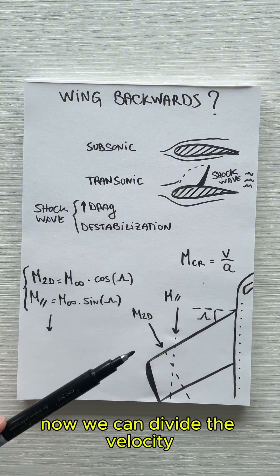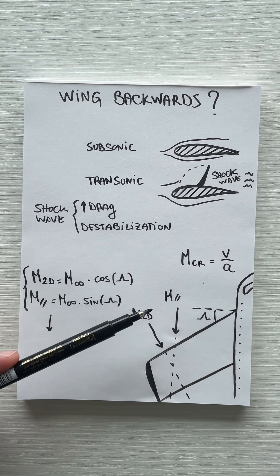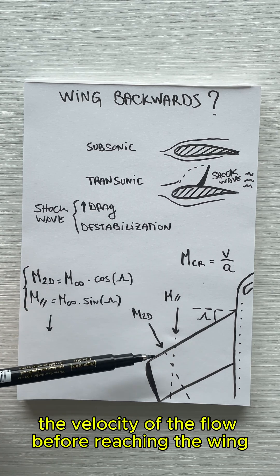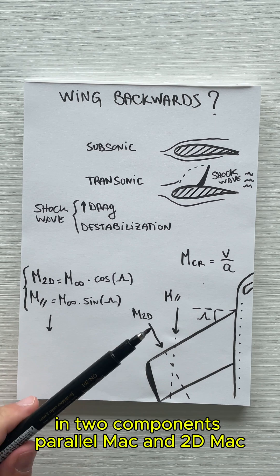Now we can divide the velocity, so Mach infinity, the velocity of the flow before reaching the wing, into two components.